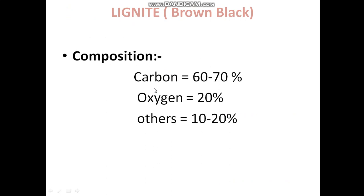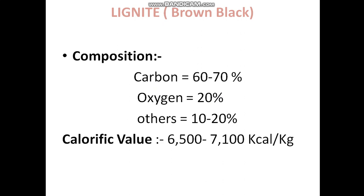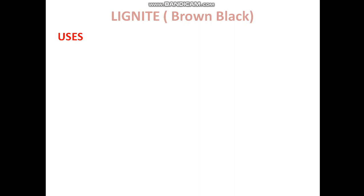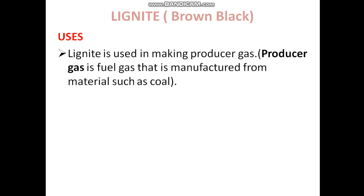The composition of lignite is: carbon 60 to 70 percent, oxygen 20 percent, and other matter 10 to 20 percent. The calorific value is 6,500 to 7,100 kilocalories per kg — much more than peat. Lignite is used in making producer gas, which is a fuel gas manufactured from coal.